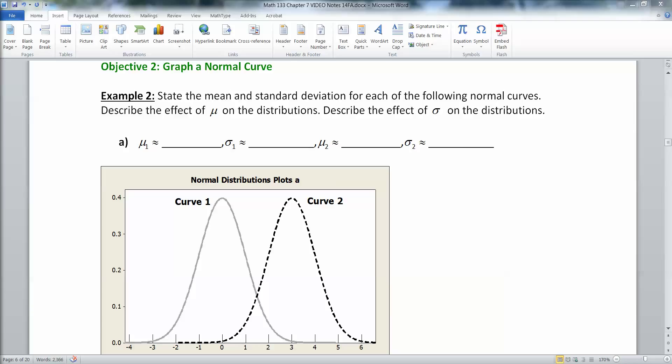So let's take a look. Now remember the mean is where the center is, and the standard deviation is where the inflection point happens. So if you look at the gray curve, that's curve number one, its mean is at zero, and curve number two, its mean is at three.